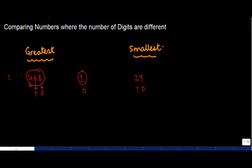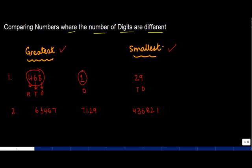Now if I give you another example: 63457, 7129, and 436821 — and ask you to find out which is the greatest and which is the smallest number, it might pose some difficulty. The easiest method when the number of digits are different is to count the digits. In 63457, you have one, two, three, four, five — so the number of digits is five. In 7129, you have one, two, three, four — so the number of digits is four.